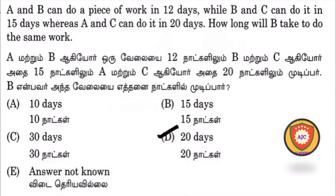First, A and B can do a piece of work in 12 days while B and C can do it in 15 days. Whereas A and C can do it in 20 days, how long will B take to do the same work?